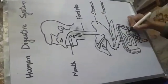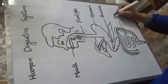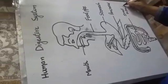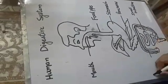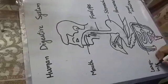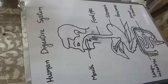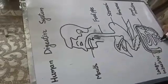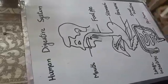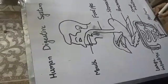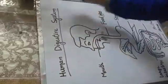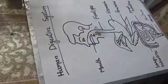This one is small intestine, this is large intestine, and this is rectum and anus. So you have to draw the human digestive system.